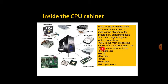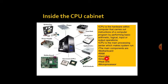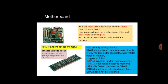CPU is the main processing center which makes the system run. The main components inside the CPU are the motherboard, RAM, hard disk, SMPS, heatsink, and microprocessor. RAM stands for random access memory, and ROM stands for read only memory. RAM is located inside the CPU.